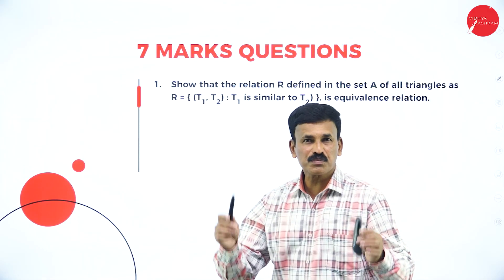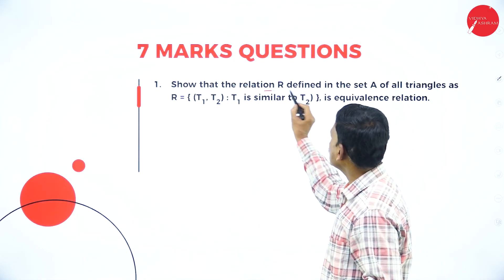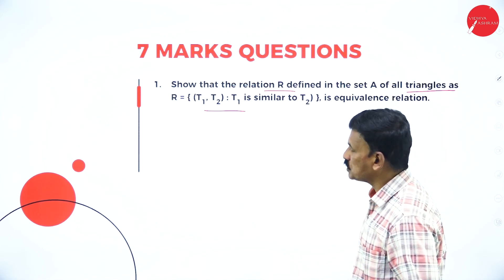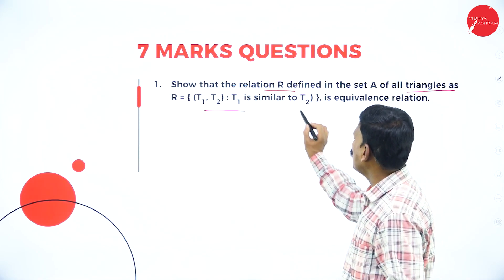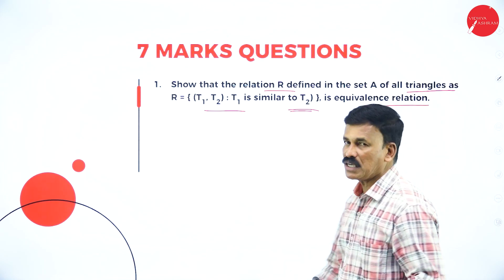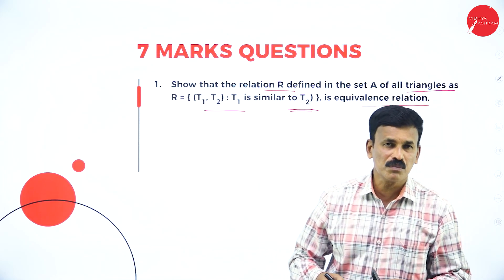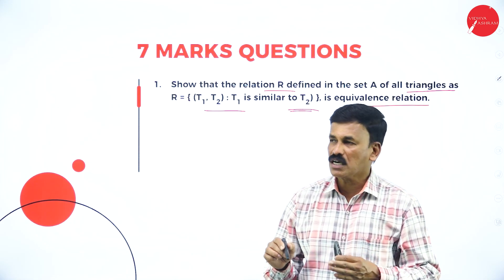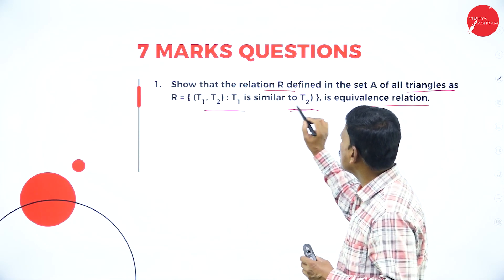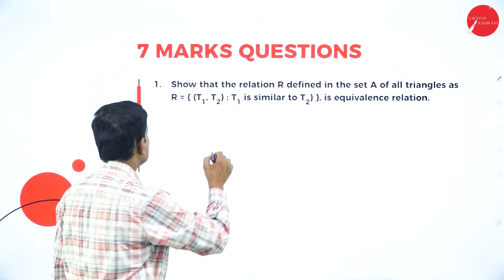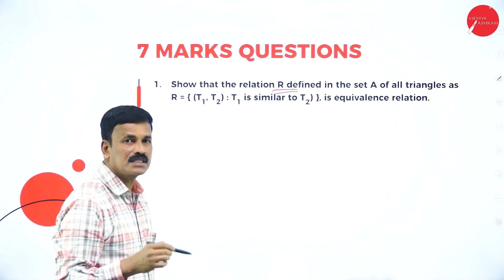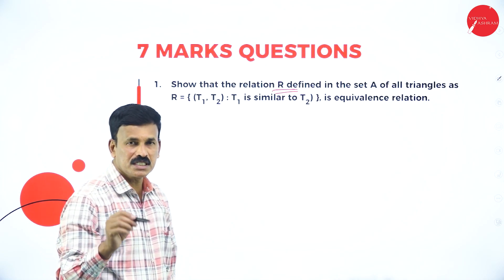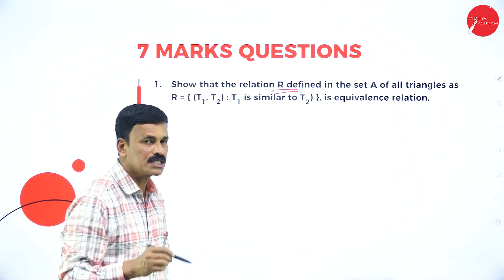Moving on to the first problem: show that the relation R defined in the set A of all triangles as R = {(T1, T2) such that T1 is similar to T2} is an equivalence relation. To verify that R is an equivalence relation, we must verify all three conditions: whether R is reflexive, symmetric, and transitive.